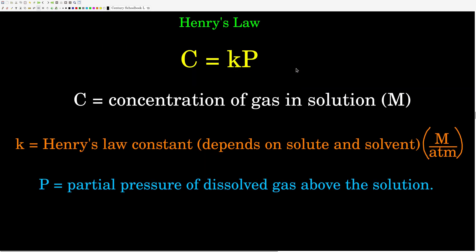Let's look at Henry's Law. Henry's Law lets us calculate the solubility of a gas in a solution. It's a simple equation: C equals Kp, where C is the concentration of the gas in solution in units of molarity, K is Henry's Law constant with units of molarity per atmosphere — its value depends on both the solute and the solvent — and P is the partial pressure of the dissolved gas above the solution.